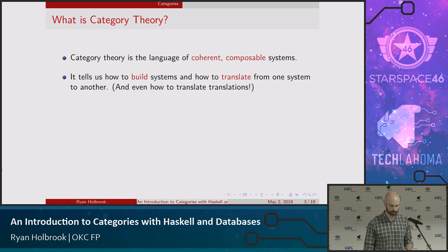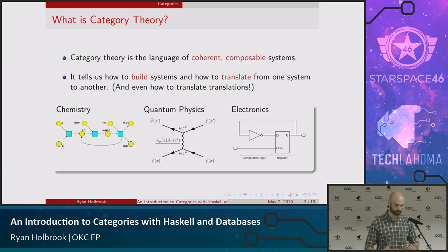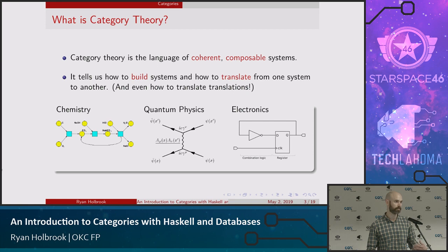Some examples of where category theory has been applied, aside from Haskell and databases: in chemistry, you have chemicals that you put together to assemble into new kinds of chemicals; quantum physics — interactions between quantum particles; electronics and wiring diagrams. The rule of thumb is that whenever you have a diagram showing how different things interact or are assembled together, you probably have a category lurking around somewhere.